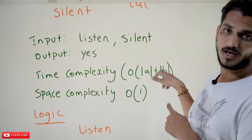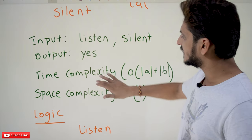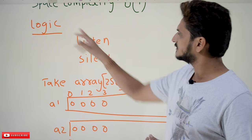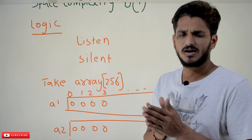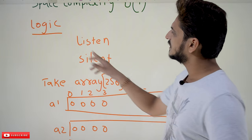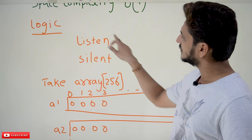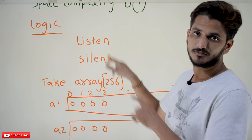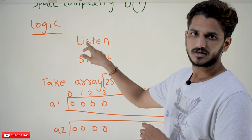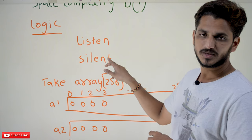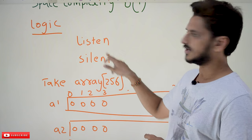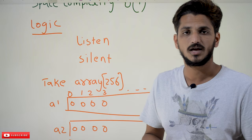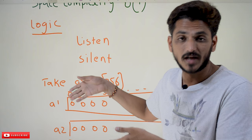First we'll discuss the regular logic. For 'listen' and 'silent', the normal logic is: take L, check how many times L is present in the second string; do the same here. If both counts are the same, take the next character I, check if I is present, then S, then T — and so on. This is very simple logic, but it takes O(n²) time.